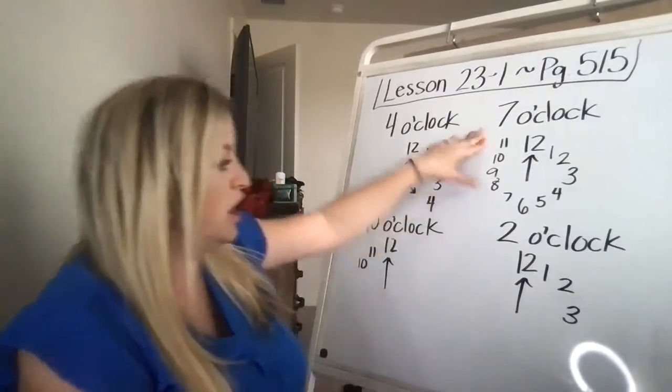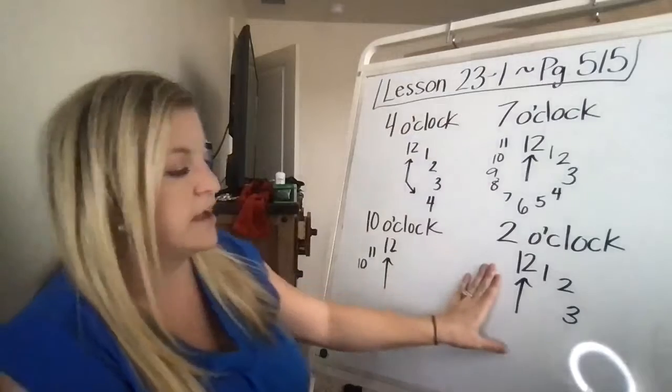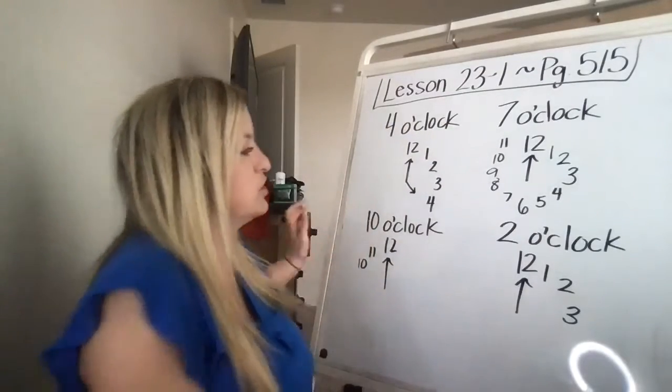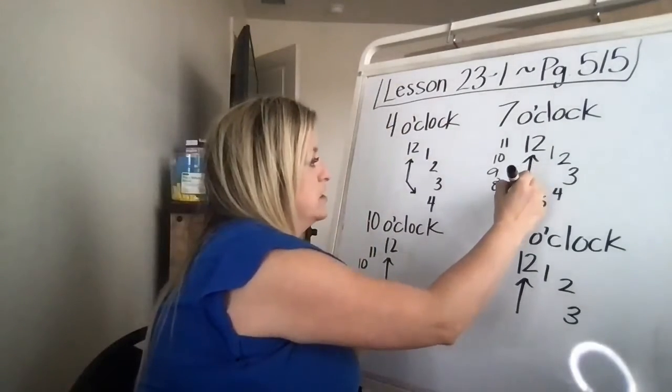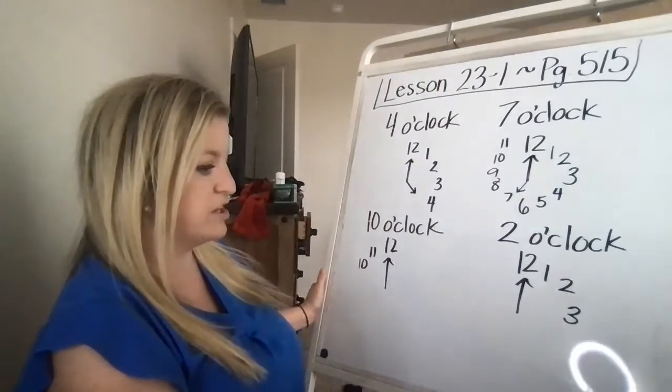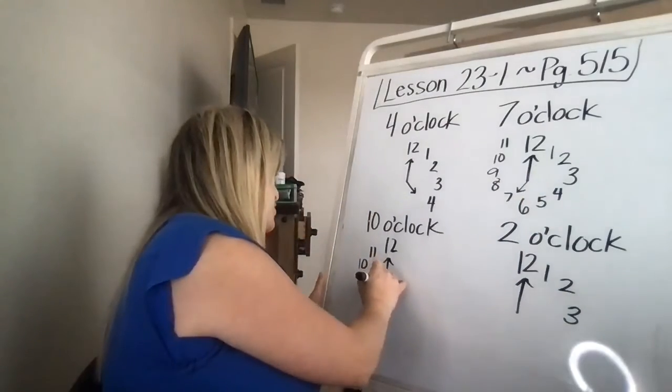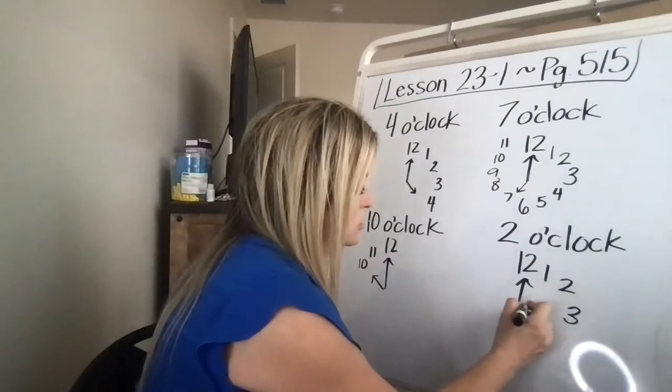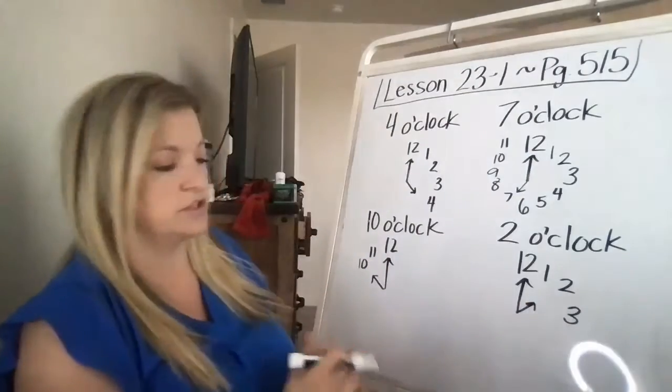So go ahead and do seven o'clock, ten o'clock, and two o'clock. Seven o'clock is going to draw a little short hand, the hour hand, to the seven. Ten o'clock is drawing a little short hand to the ten. And two is a little short hand to the two.